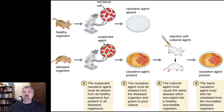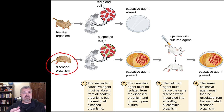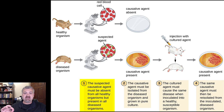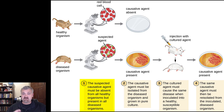You'll see here at the top that the first thing is: an organism that causes a disease should be absent from healthy animals. The healthy rodent here shows the organism is absent. So that's kind of rule number one. The suspected causative agent must be absent from all healthy organisms, but present in all diseased organisms — and that's very important.